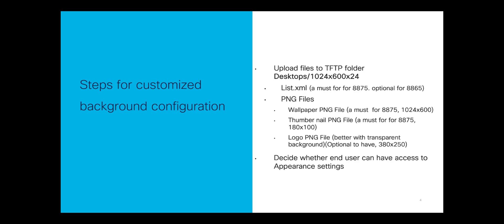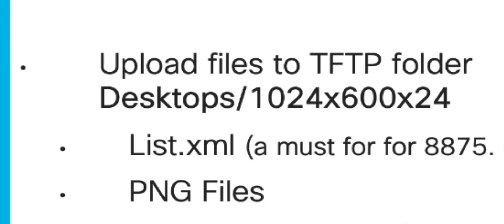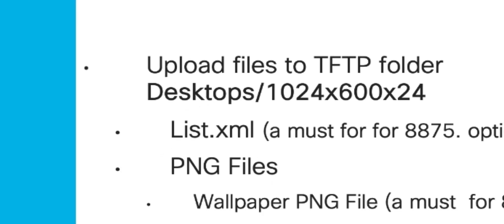One of the main differences between the 8875 and the other 8800 series is that you must use a list.xml file. This is a hard requirement. And you must also upload your PNG files to this directory. That's also a requirement.